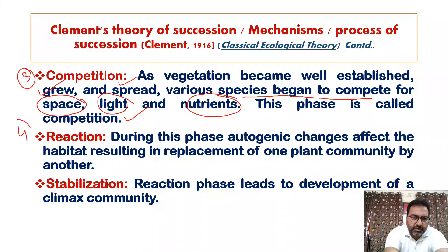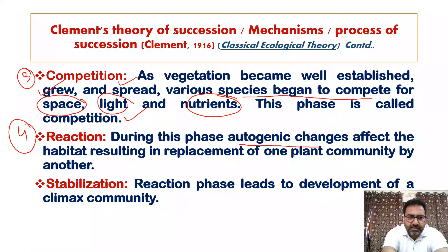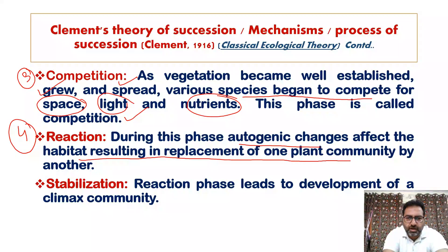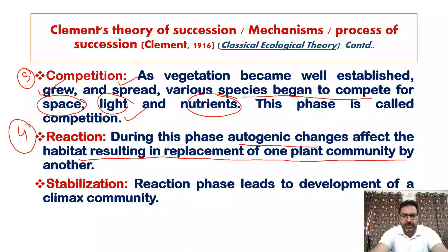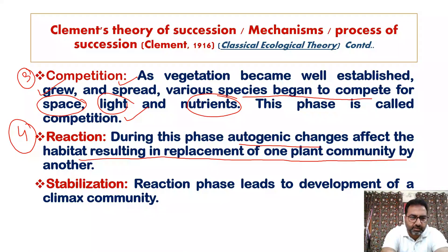The fourth important step in ecological succession is reaction. During this phase, autogenic changes affect the habitat, resulting in the replacement of one community by another. Some species will not tolerate one another and result in the replacement of one plant community by another. Certain autogenic changes make the habitat no longer fit for the existing vegetation, and it gets replaced by some other community.